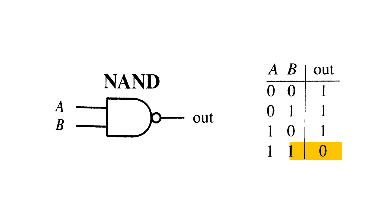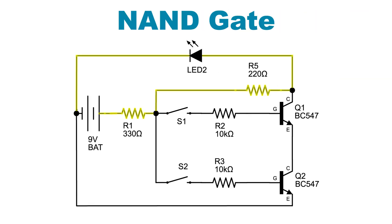With a NAND gate, the output is high unless both inputs are high. So power would route through the 220-ohm resistor to the LED, and it would be on, unless both switches are closed, allowing current to flow through both transistors rather than the LED.